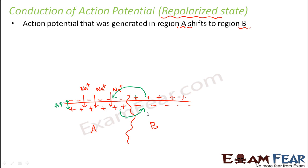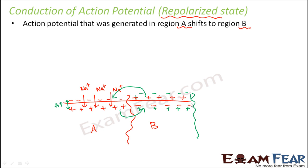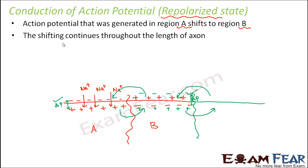Once the current flows from A to B on the inner side and B to A on the outer side, region B will tend to have positive on the inner side and negative on the outer side, and this difference will become the action potential. Then the same process will take place between region B and region C, and that is how the action potential will get transmitted from one part of the neuron towards the other — throughout the length of the axon.